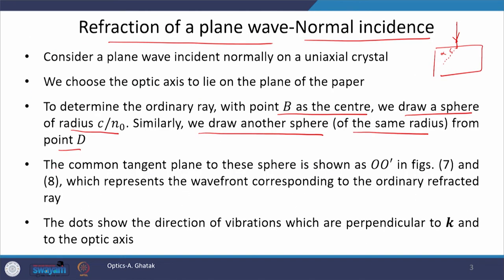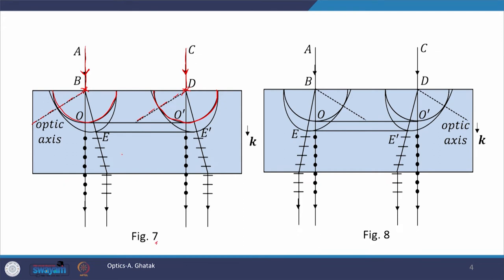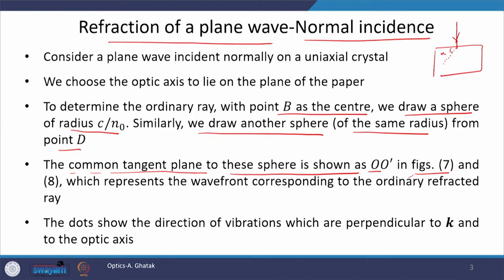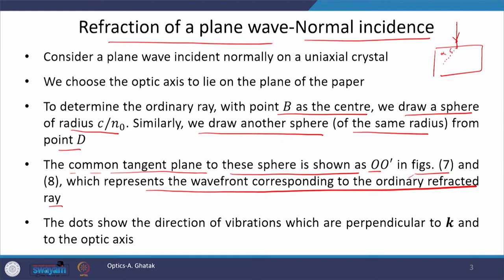We then draw a common tangent to these spheres. The common tangent plane to these spheres is shown as OO′ in figure 7, and this common tangent represents the wavefront corresponding to the ordinary refracted ray. So a plane wave falls on the double refracting crystal normally; treating points B and D as centres, we draw two spheres, then draw a common tangent to these spheres, and this common tangent represents the wavefront which corresponds to the ordinary refracted ray.